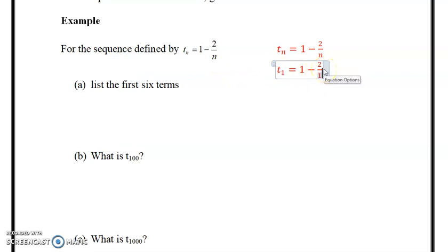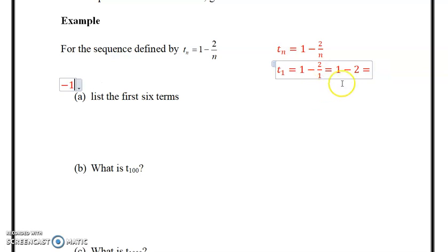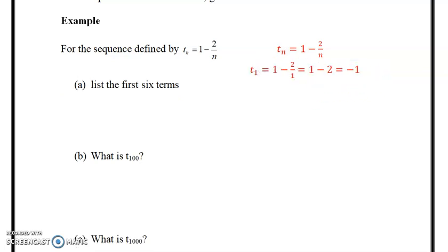We put in t1, and t1, wherever we see n, we put 1 in, so this is simply equal to 1 minus 2, which is equal to negative 1. So the first term in the sequence is going to be negative 1, and you would continue to do this to get the rest of the terms.